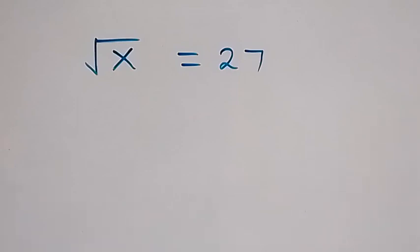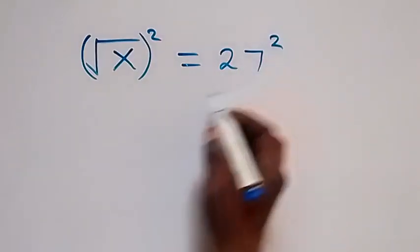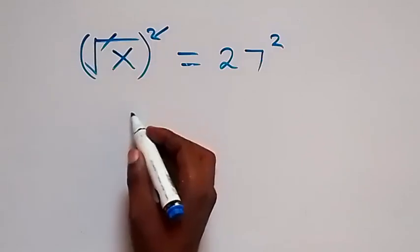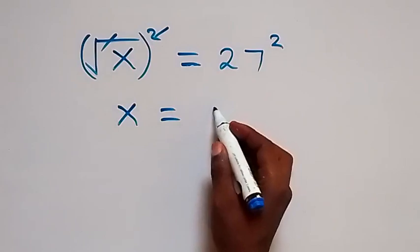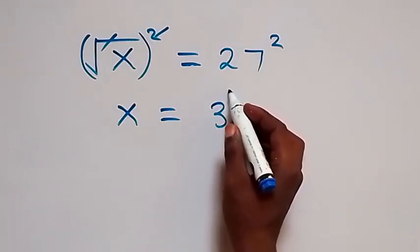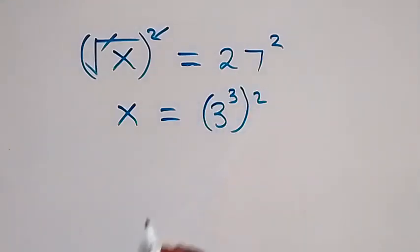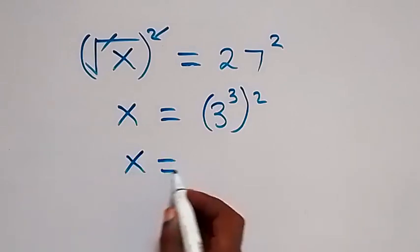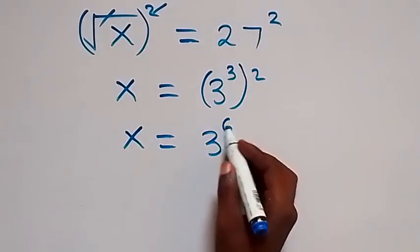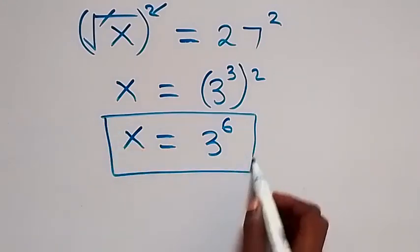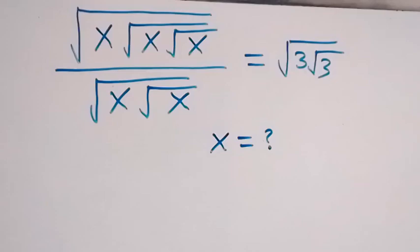We can also square both sides again. Squaring the left side, the square cancels the square root and we have x. On the right, we write 27 as 3 raised to the power 3, so we have 3 raised to power 3, then raised to power 2. Multiplying the powers gives us x equals 3 raised to power 6.